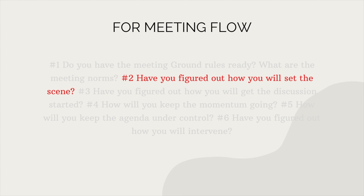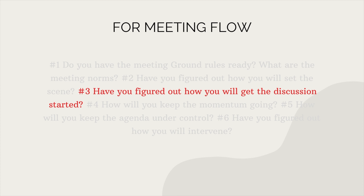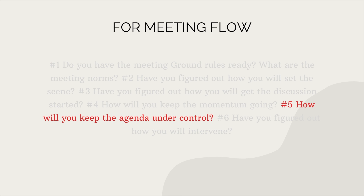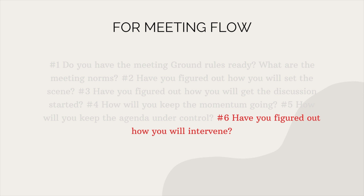Number two: have you figured out how you will set the scene? Write down and plan how you will go over the objectives and agenda, ensuring that everyone knows their role and what the group is trying to accomplish. Number three: have you figured out how you will get the discussion started? Write down and prepare how you will make sure that everyone introduces themselves. Do you have an icebreaker in mind? Number four: how will you keep the momentum going? As the session proceeds, you may need to interfere to ensure that attendees remain engaged. When I notice that energy levels are beginning to decline, I almost always insert a break — powerful technique. Number five: how will you keep the agenda under control? Prepare to monitor checkpoints and occasionally summarize to let participants know what they have achieved and what's next. Number six: have you figured out how you will intervene? As a facilitator, you intervene in a variety of situations, so prepare a strategy for when and how you will do it.